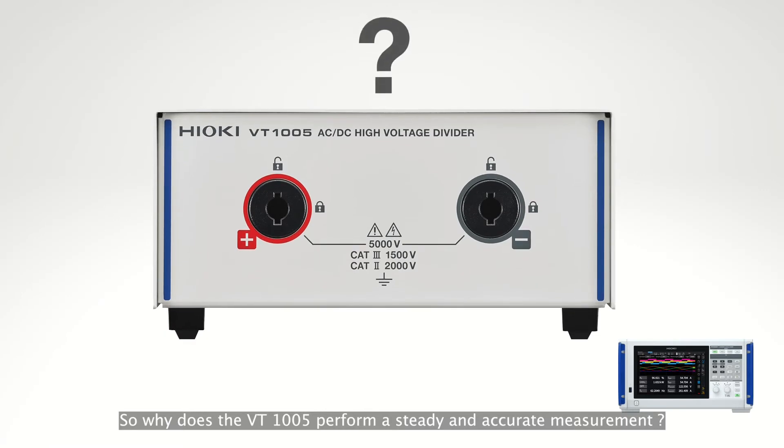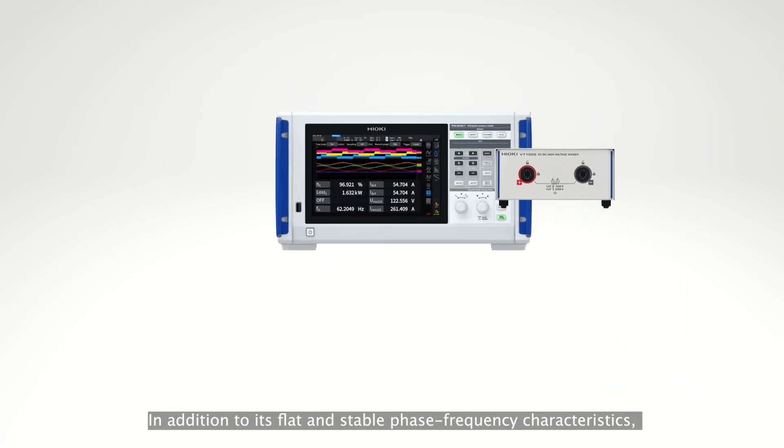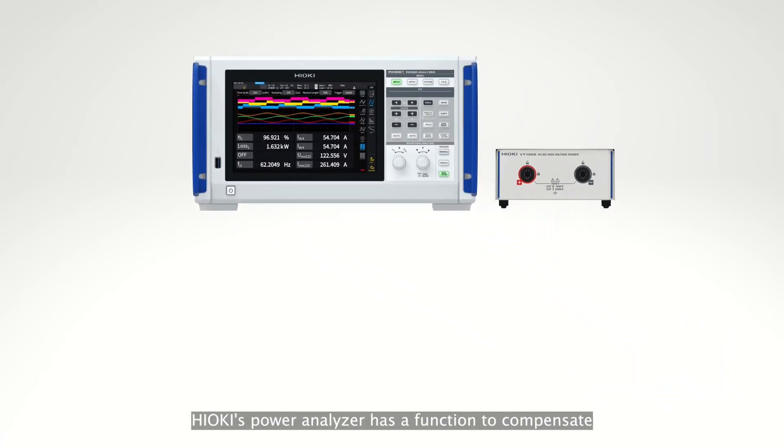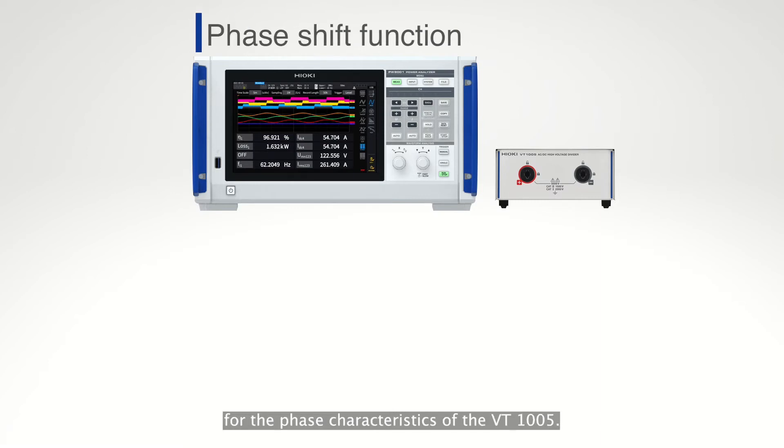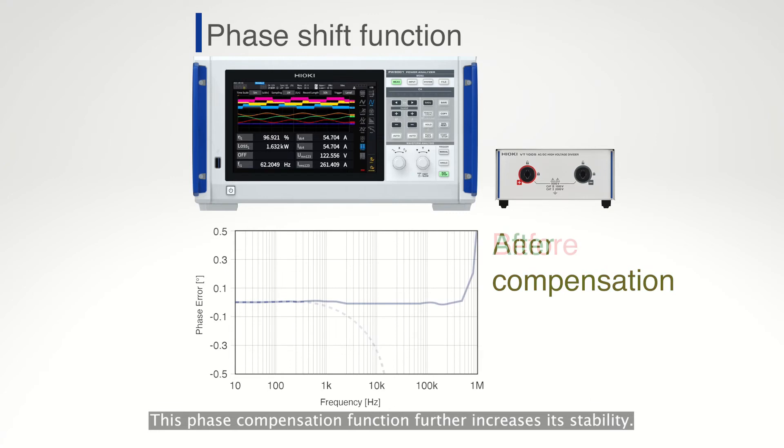So, why does the VT1005 perform a steady and accurate measurement? In addition to its flat and stable phase frequency characteristics, Hioki's power analyzer has a function to compensate for the phase characteristics of the VT1005. This phase compensation function further increases its stability.